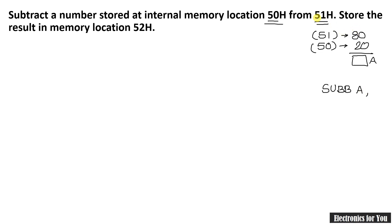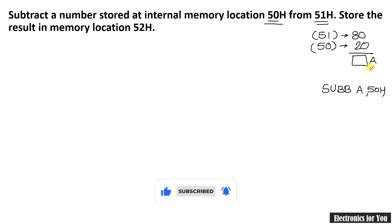Note that in this case, the operand will be the direct memory location, and it is always accumulator minus some data. See the program: it is subtract a number stored at internal memory location 50H from 51H — meaning 51H minus 50H. Therefore the instruction will be SUBB A, comma 50H. Whatever the result will be in the accumulator, you have to store it at memory location 52H. Let us write the program now.